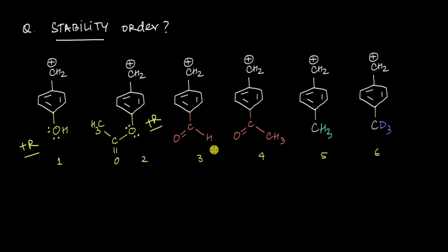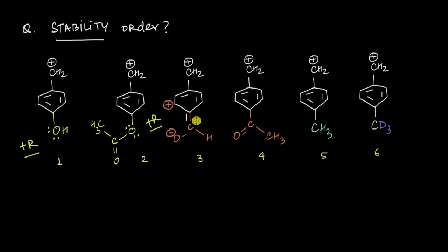Now if we come to this particular group, this carbon atom doesn't have any lone pair of electrons, so there can't be any +R effect here. However, there is a pi bond between carbon and oxygen. We've learned that if we have a pi bond, we can move it to the more electronegative element, leaving an empty orbital over the carbon atom. This empty orbital can then pull electrons from the system, making this an electron-withdrawing group — a −R group. It decreases electron density via resonance. Similarly, the next group also has a C=O, so it too is a −R group that withdraws electrons from the benzene ring.